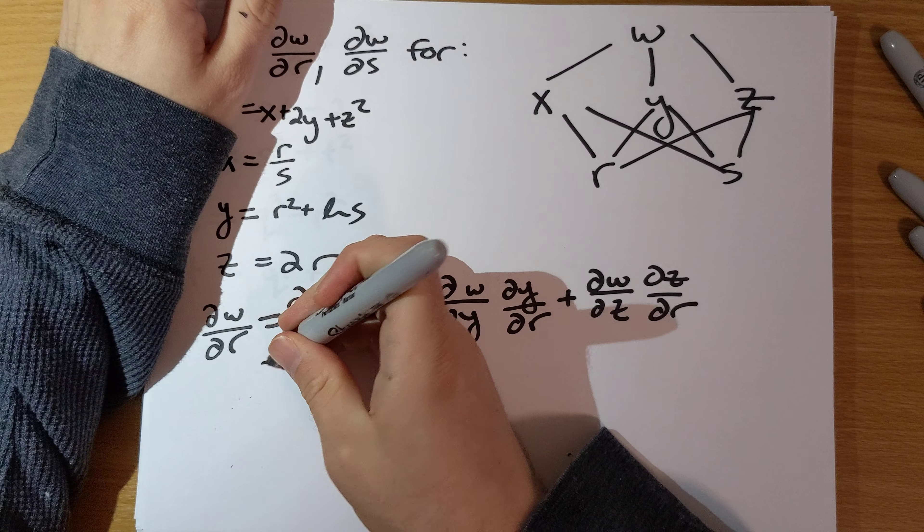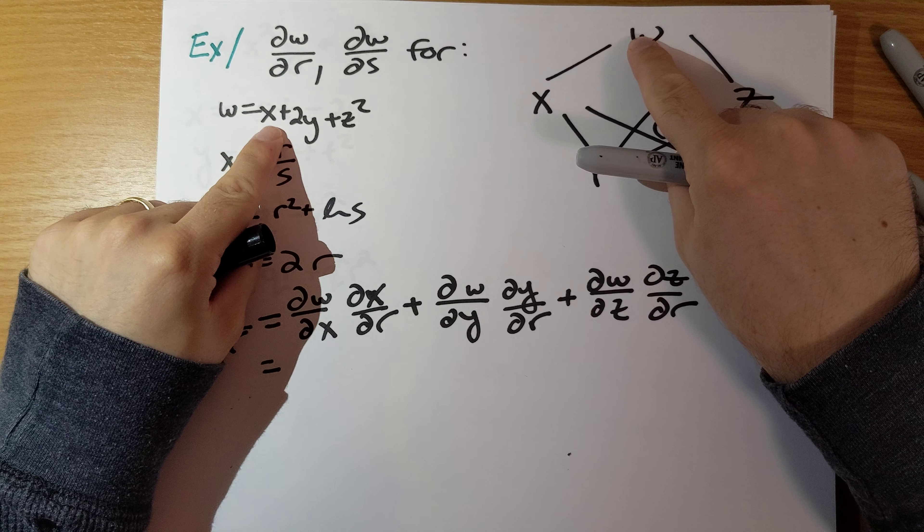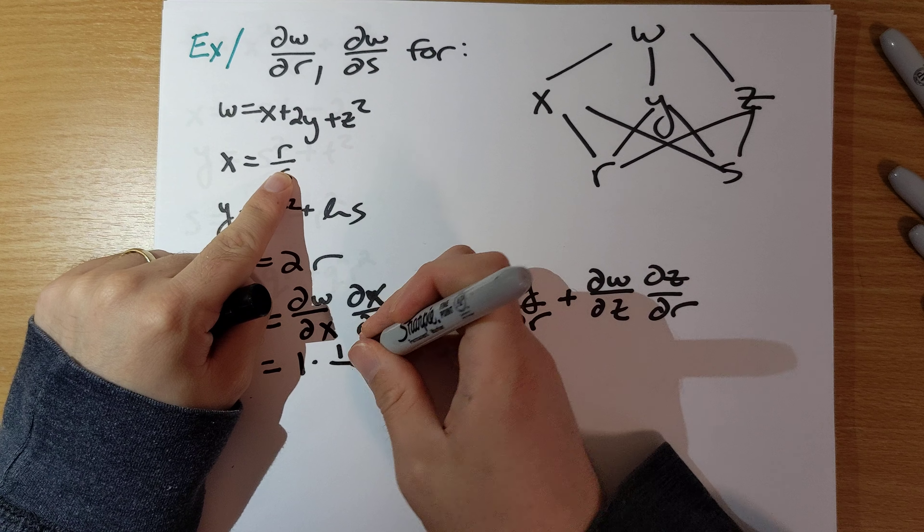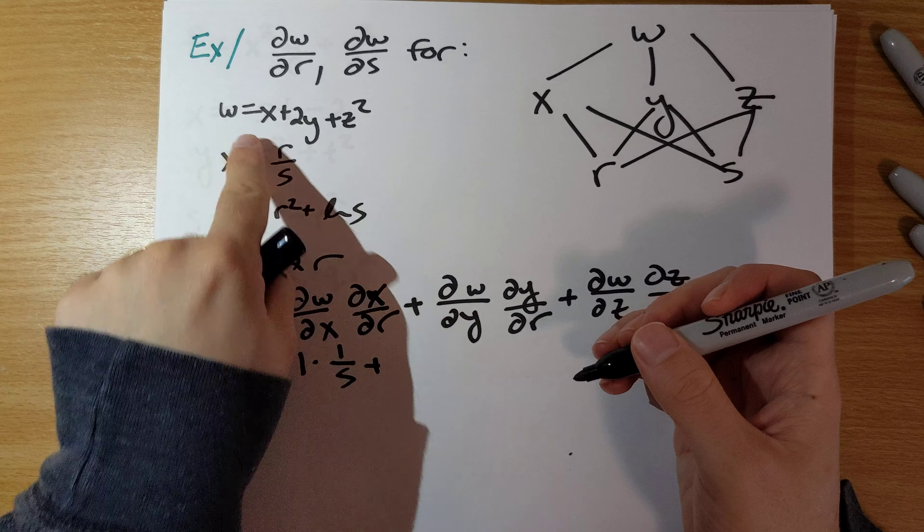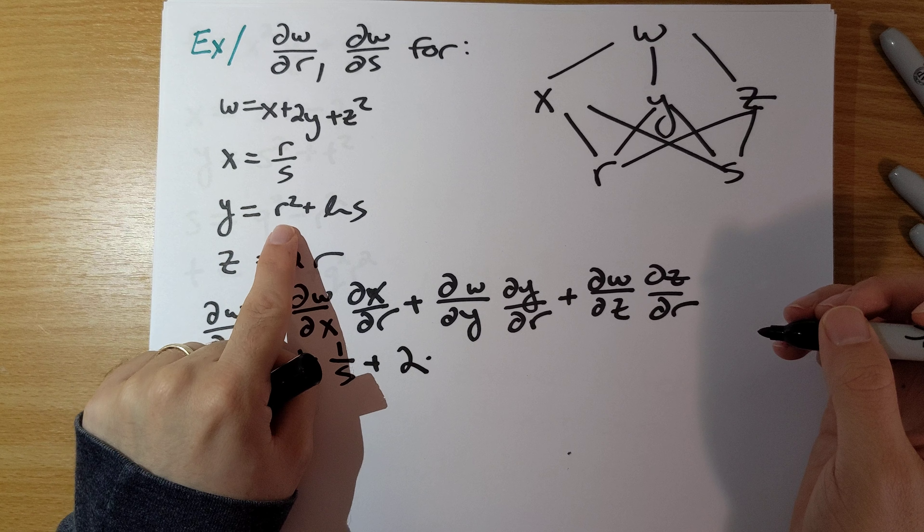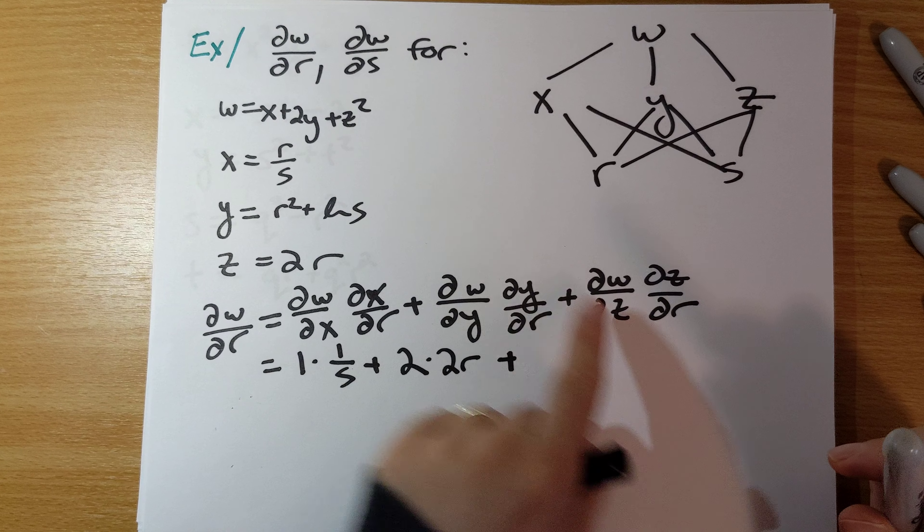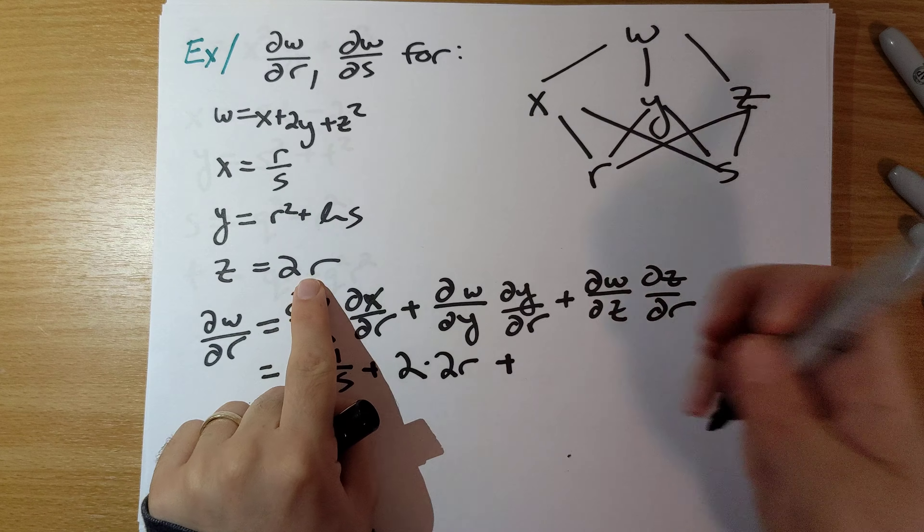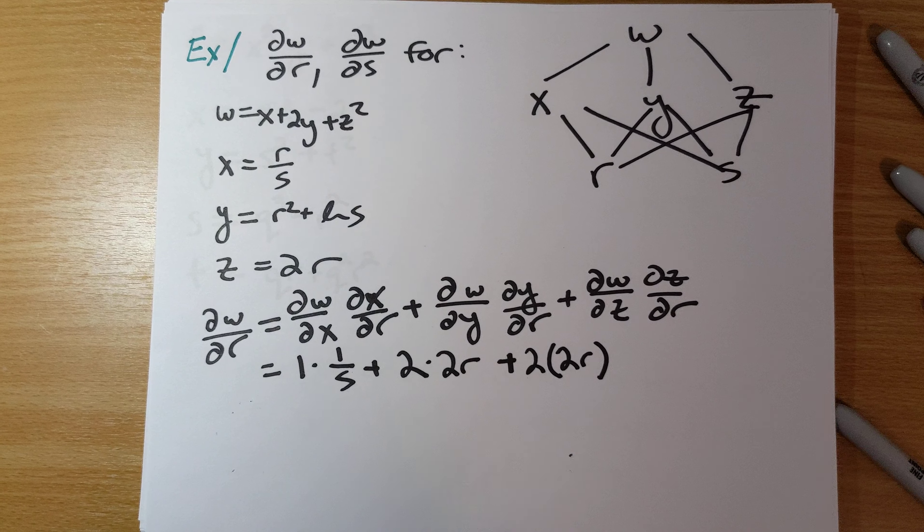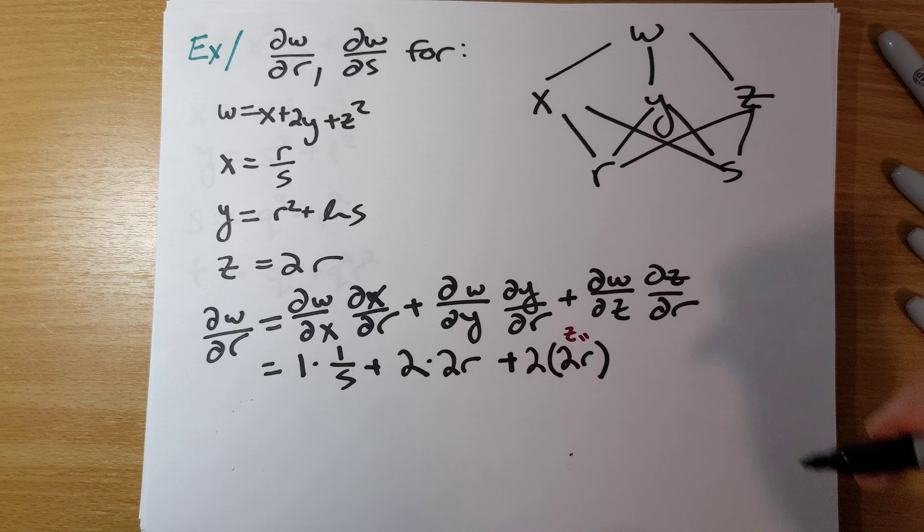Okay, so let's fill in stuff here. Partial W partial X is going to be one times partial X partial R is going to be one over s. Partial W partial Y is going to be two, partial Y partial R is going to be two r. And then partial W partial Z will be two z, but we want to write z in terms of r, so this becomes two r, partial Z partial R is going to be one.